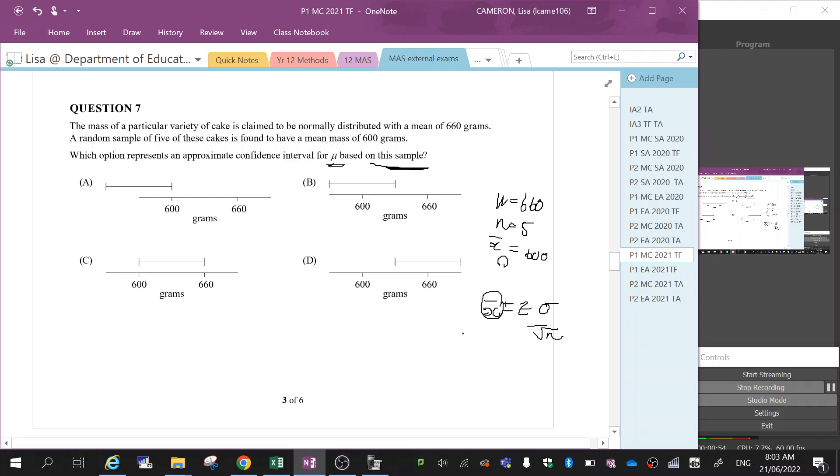Now, this is the middle - it's adding and subtracting the error. So we're looking for the one that has this in the middle. We want 600 in the middle. That would be B. So your answer is B.